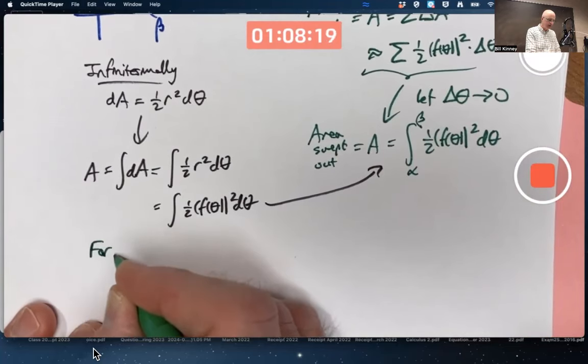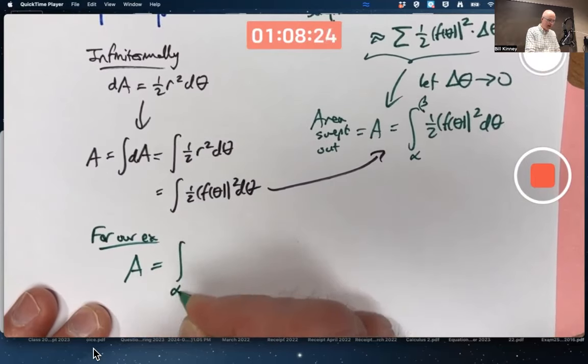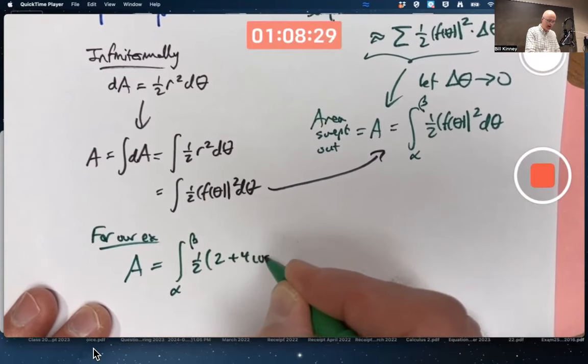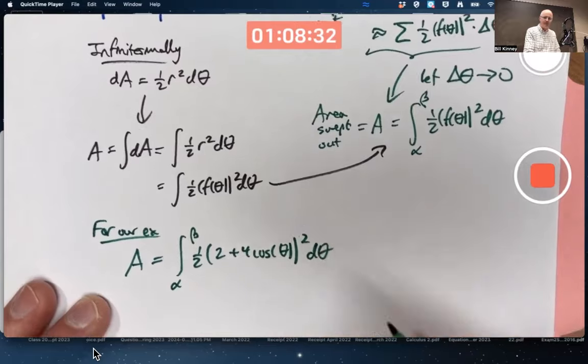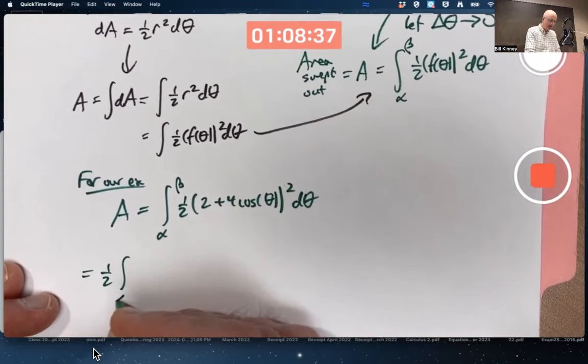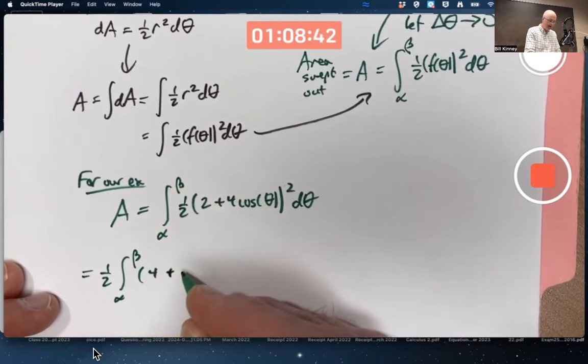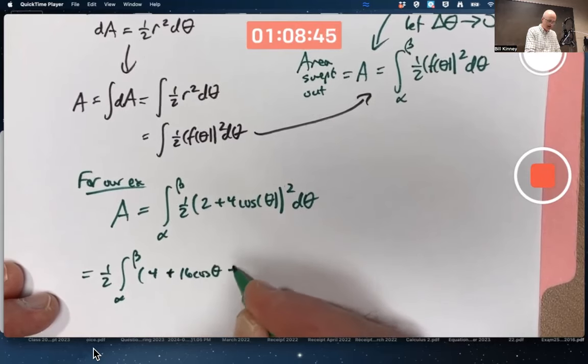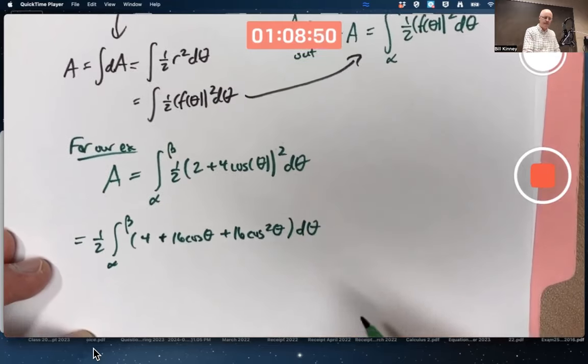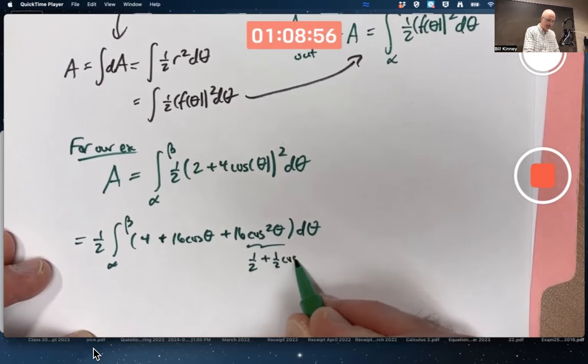For our example, A is going to be the integral from alpha to beta, one half F of theta was two plus four cos theta. That gets squared. That's a doable integral. I'll bring the one half out in front, one half integral from alpha to beta. Four plus, when I FOIL, I'll get a 16 cos theta, and also a 16 cos squared theta.